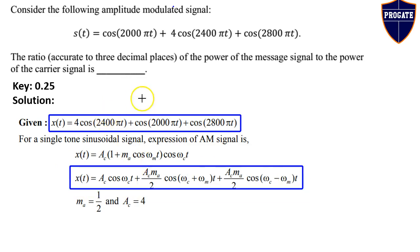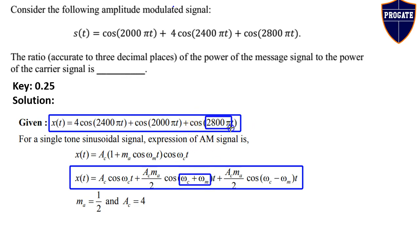Comparing the given equation with the expanded standard equation term by term — both contain three terms. The term with the highest frequency corresponds to cos((ωc + ωm)t), which equals cos(2800πt), so ωc + ωm = 2800π, and the coefficient Ac·MA/2 = 1. The lowest frequency term gives ωc − ωm = 2000π, and similarly Ac·MA/2 = 1.